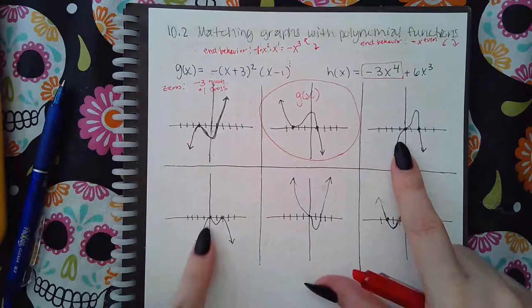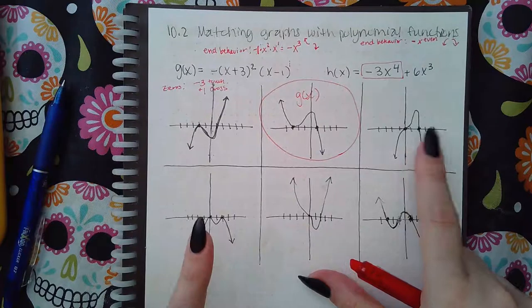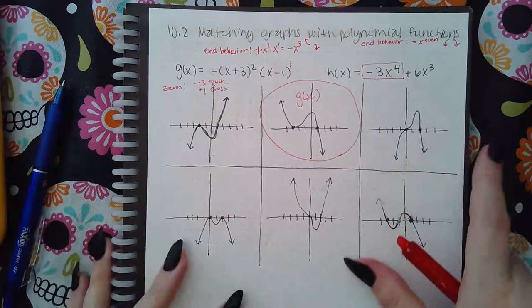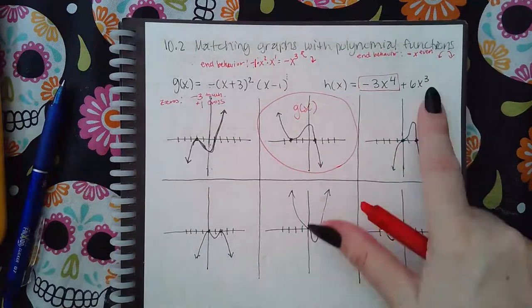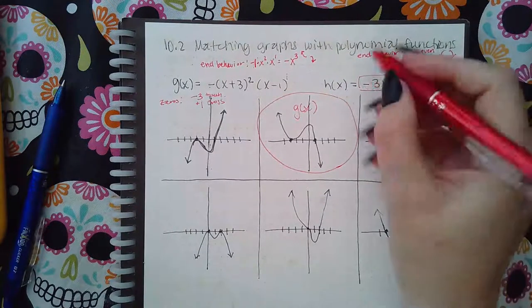Now both of them have x-intercepts at zero and x-intercepts at two, so that's not enough for me to decide which one is which. Plus, I don't even know what the x-intercepts are just looking at this. So how do I figure that out? You'd have to factor the function.